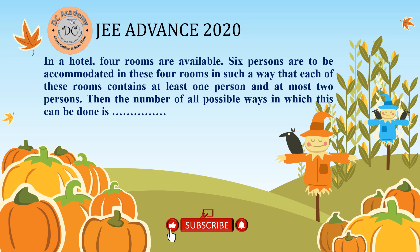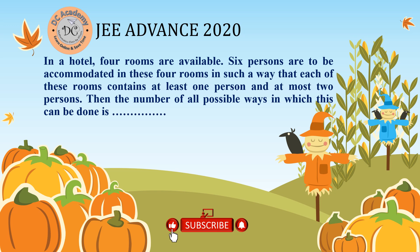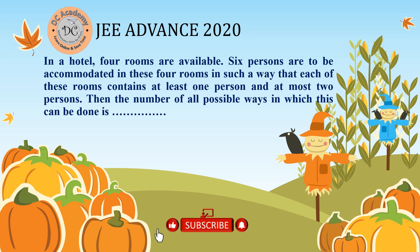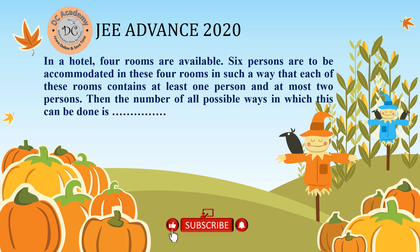In this video we're going to solve a particular problem which appeared in the JEE Advanced 2019 paper. We have a hotel with four rooms available and we have to accommodate six persons. The condition is that each room must have at least one person and at most two persons — no room can be empty and no room can have more than two people.